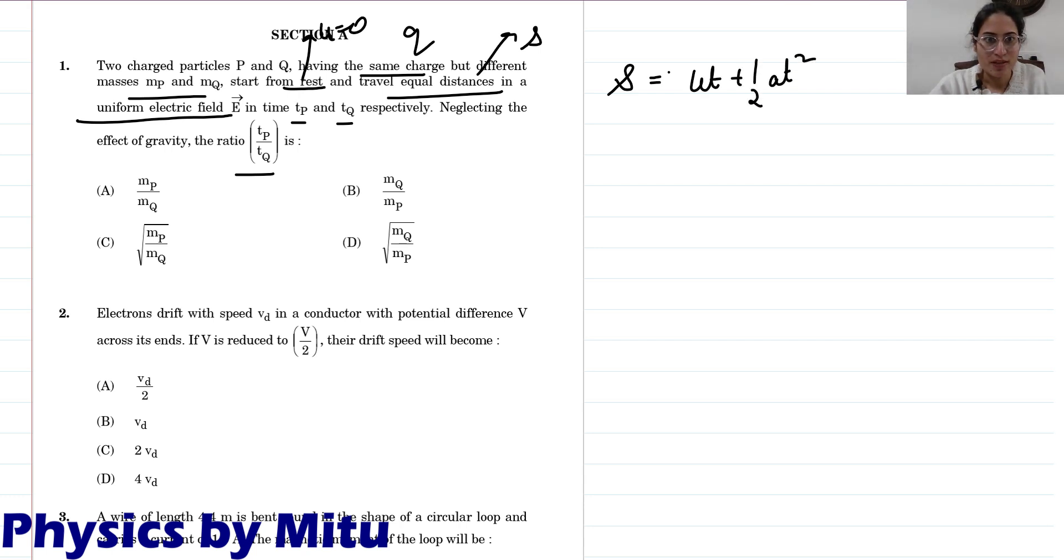Force is due to the electric field, qE upon m, times t square. Now t square is 2ms upon qE, so t equals square root of 2ms upon qE.